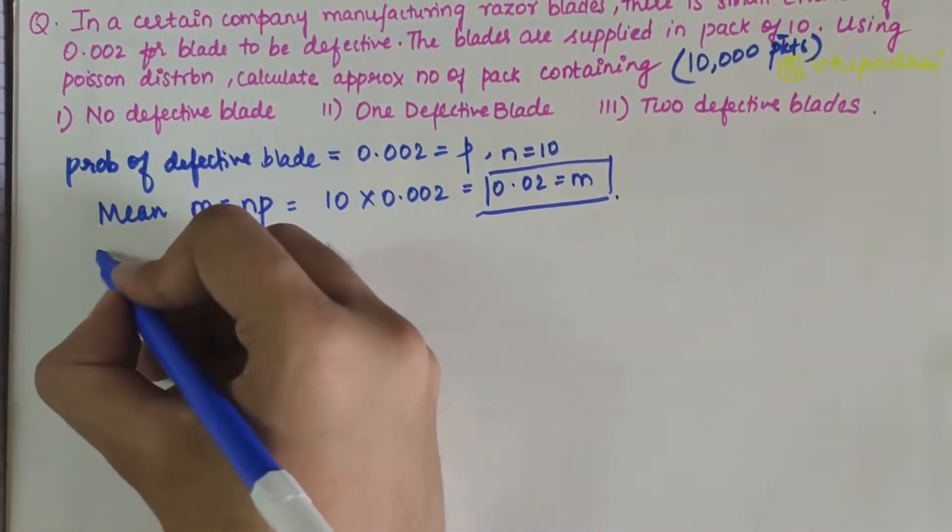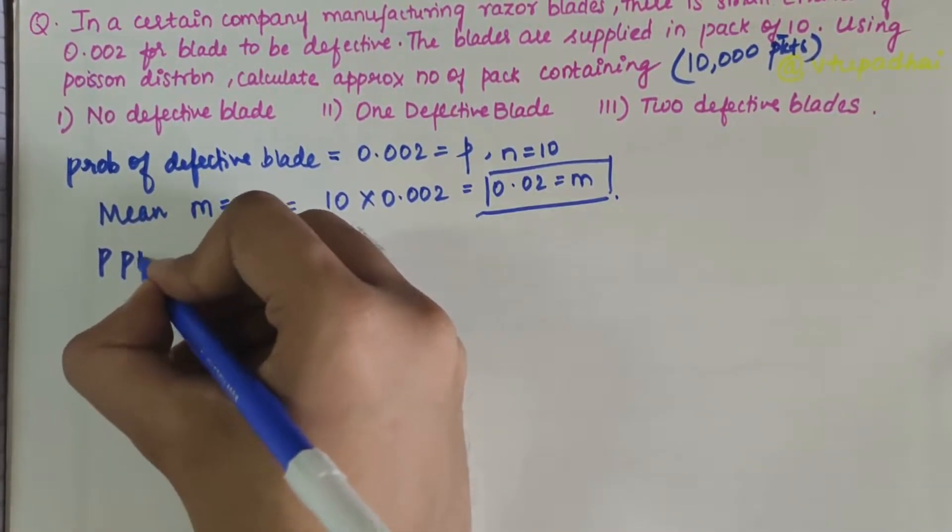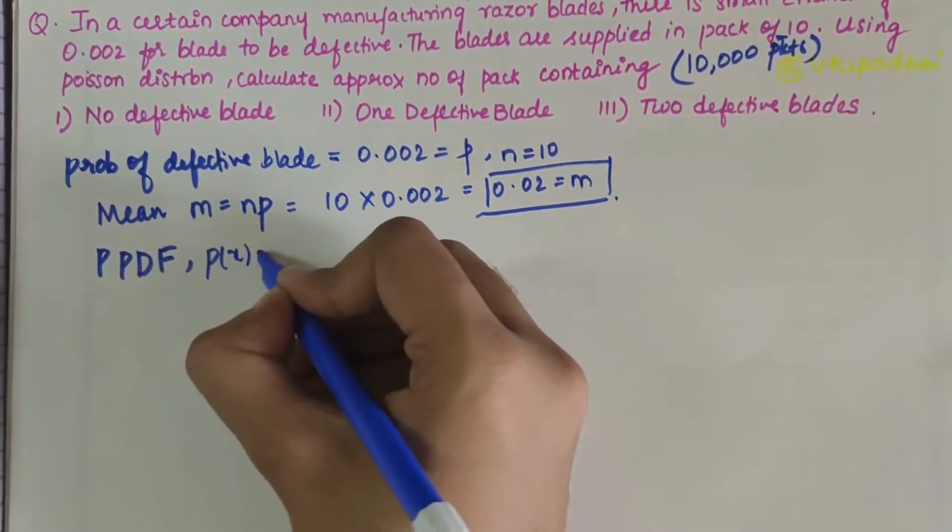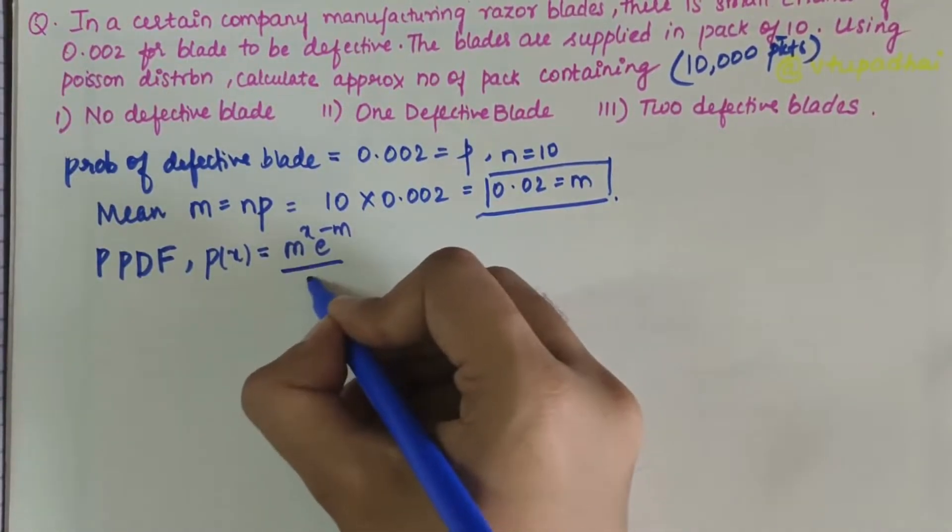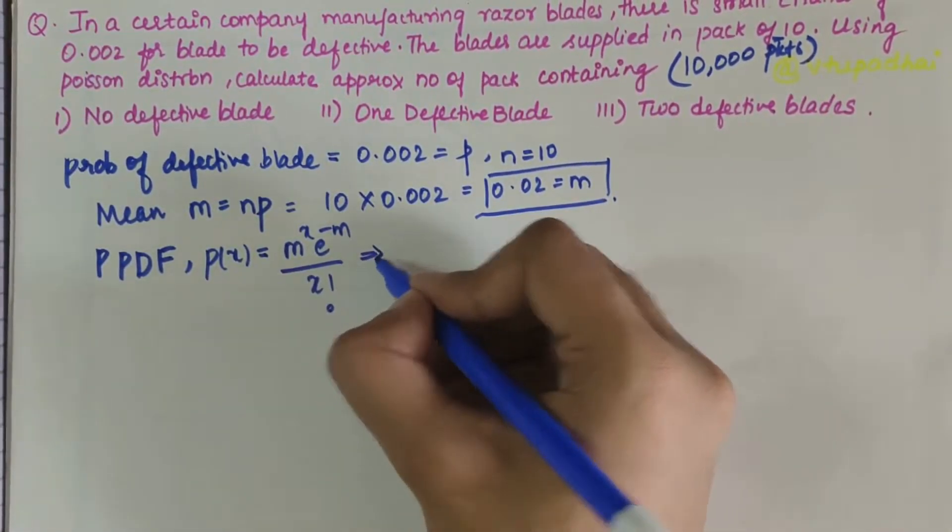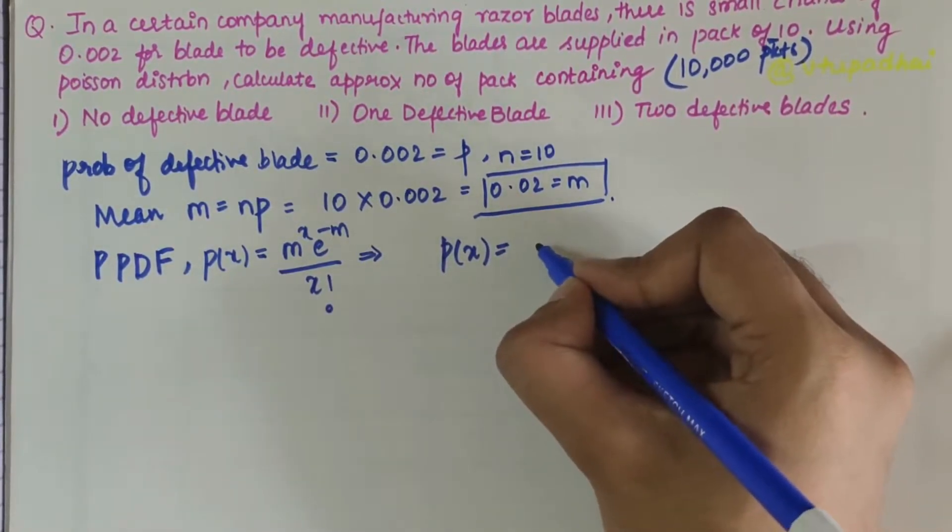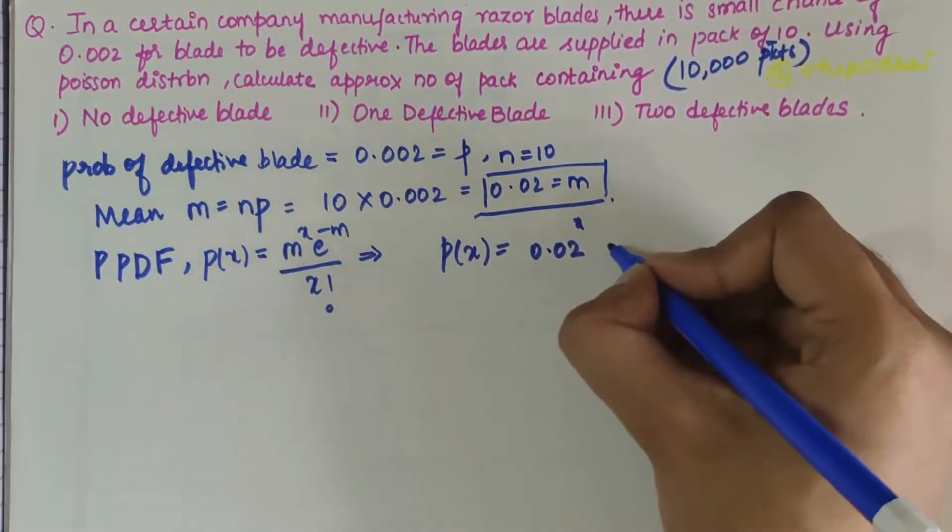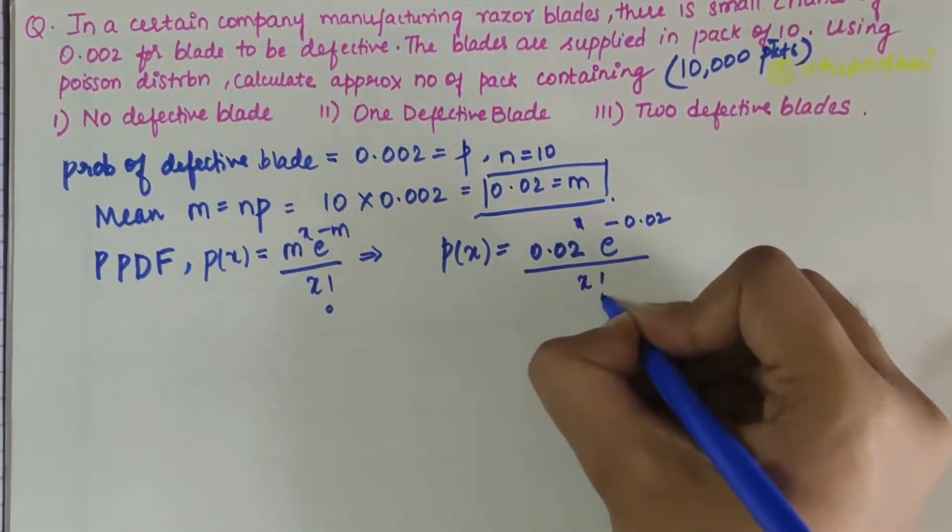Now writing the Poisson probability distribution function: P(X) = (M^X × e^(-M)) / X!. With M = 0.02, this becomes P(X) = (0.02^X × e^(-0.02)) / X!.